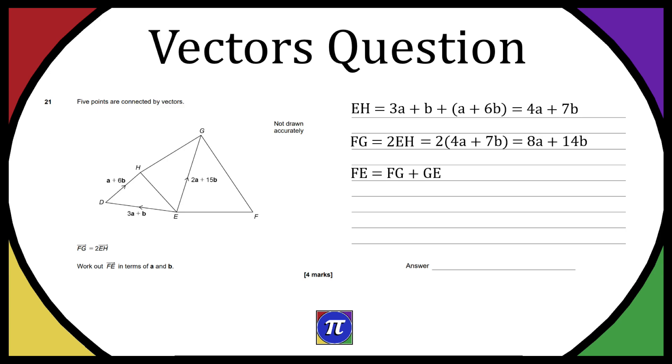So we have F to E equal to FG plus GE, which is going to be equal to 8A plus 14B because we worked out before. And then we're going to be subtracting 2A plus 15B. Then when we work that all out, it's going to be FE is equal to 8A plus 14B minus 2A minus 15B. And then simplifying further, we have FE is equal to 6A minus B.